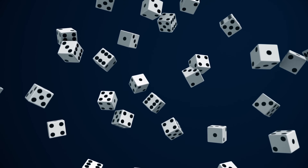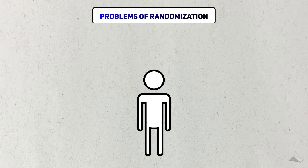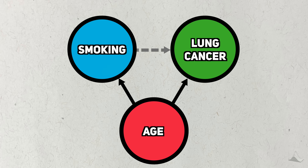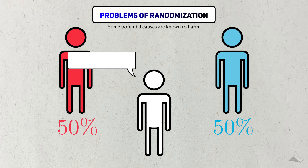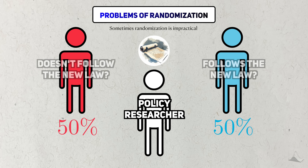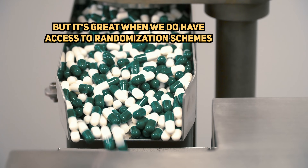Randomization is an extremely powerful tool in a statistician's toolkit, but it's not without its problems. In some cases, it may not be possible or even ethical to randomize humans to particular potential causes. In the original statistical debates on smoking, one of the key problems was that you couldn't randomize people to smoke because there was a growing body of evidence that smoking harmed people. For people who study policy, you can't just randomize some people to follow a new law and others not to. But when we can randomize treatment, it gives us our best shot at uncovering cause and effect relationships.